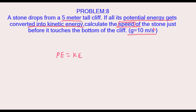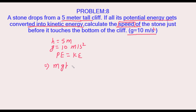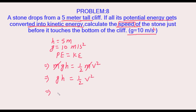The height is given as 5 meters, and g is given as 10 meters per second squared. Potential energy is given by mgh, and kinetic energy is given by one-half m v squared. Setting them equal: mgh equals one-half m v squared. The mass m cancels from both sides, giving g times h equals one-half v squared, so 10 into 5 equals one-half v squared.